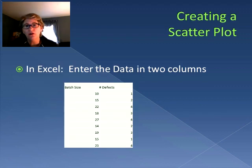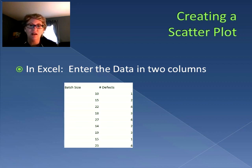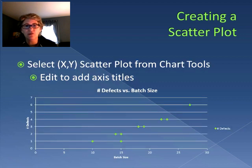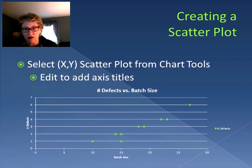In Excel, we would enter the data into two columns — one representing the x-coordinate and the other representing the y-coordinate. For example, if we had batch size and number of defects, batch size would be one coordinate and defects the other. Once that's in place, we select the x,y or scatter plot from chart tools and it creates the chart. Then we can edit it to add the axis titles, and you can see those data points sitting on the chart.